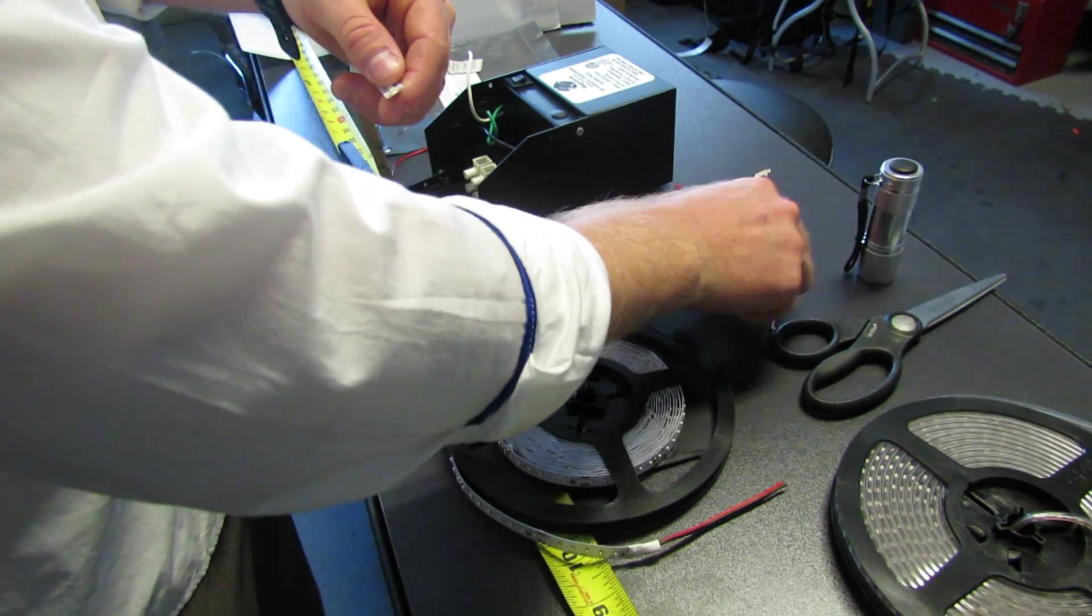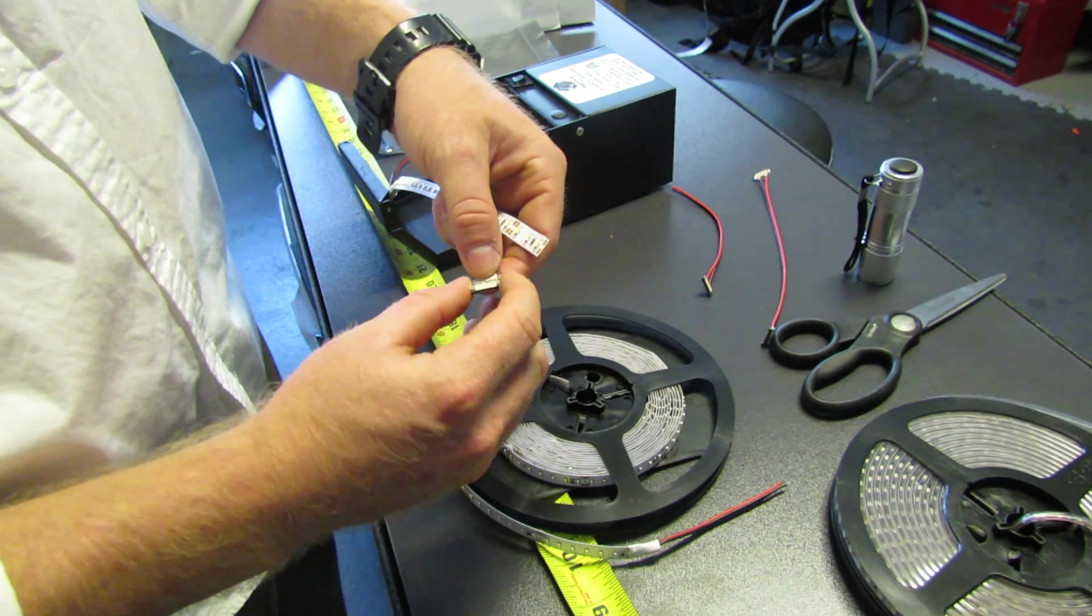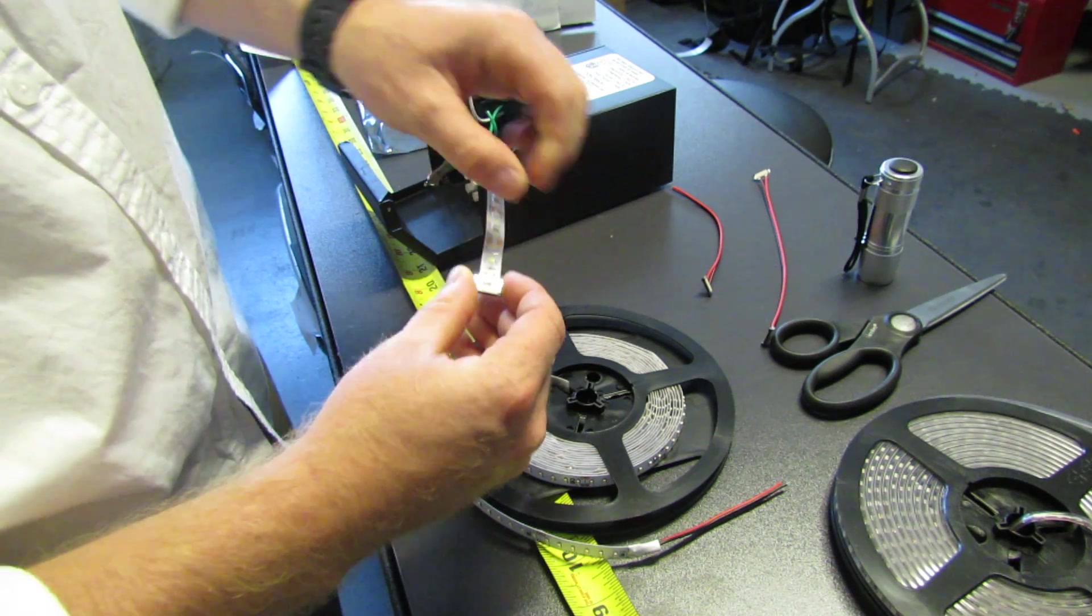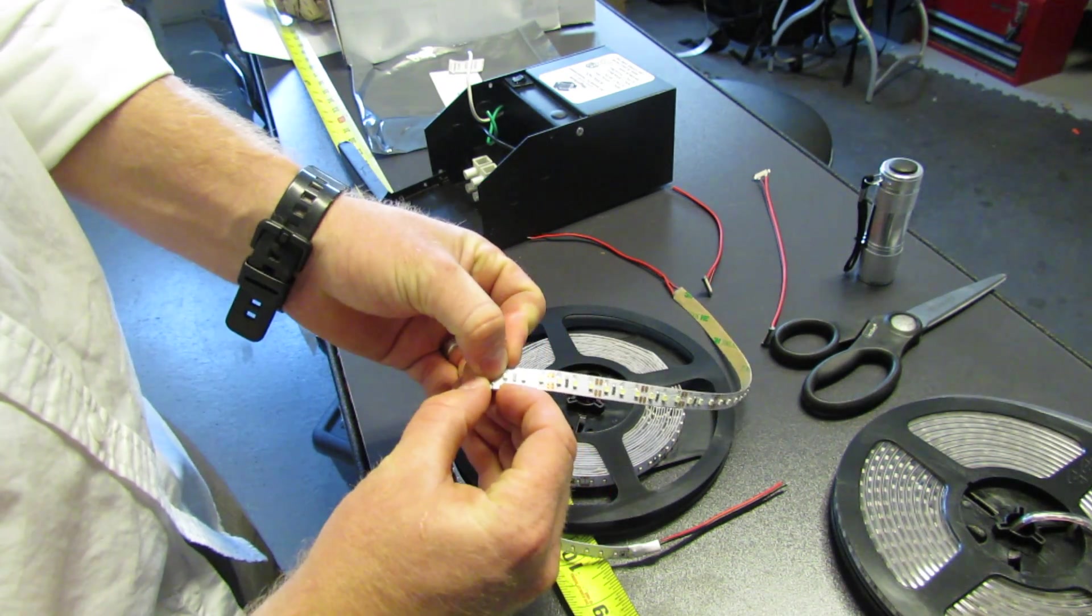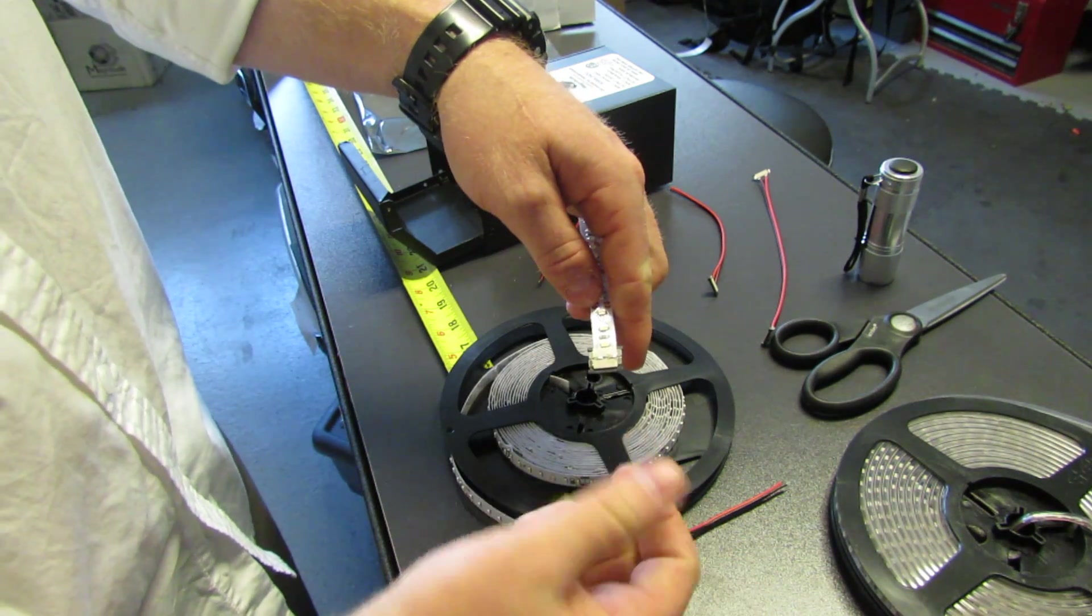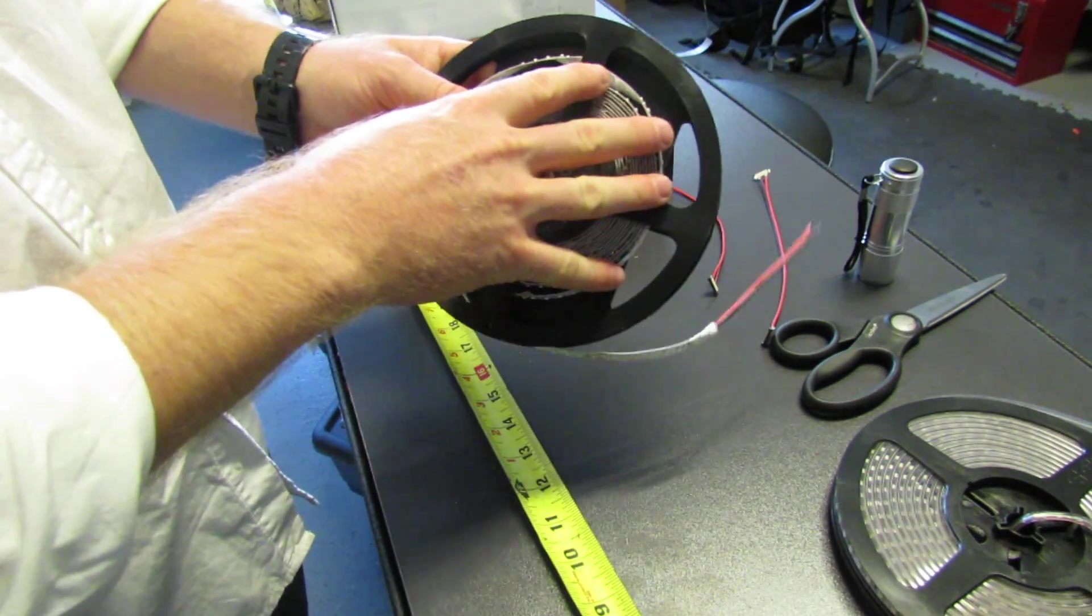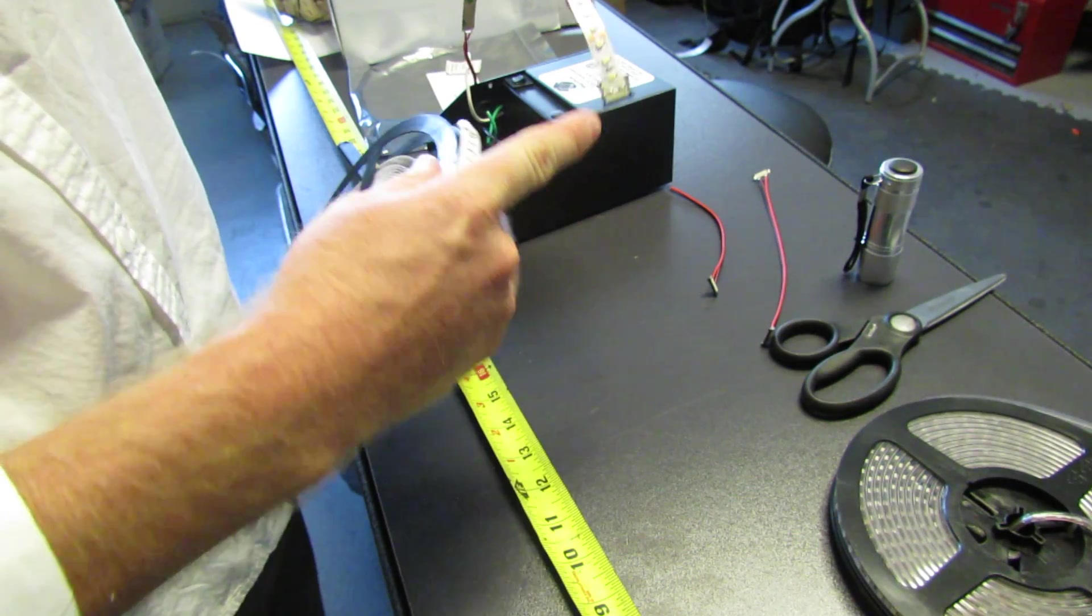What we can do is if we want to add to the strip, we can use this type of connector here, which simply goes on the end and we tighten it down. And then you do it the same on this side, a strip goes in here and it continues a strip. So we can put up to 10 meters together, five meters here. We can add another five meters using this type of connector.